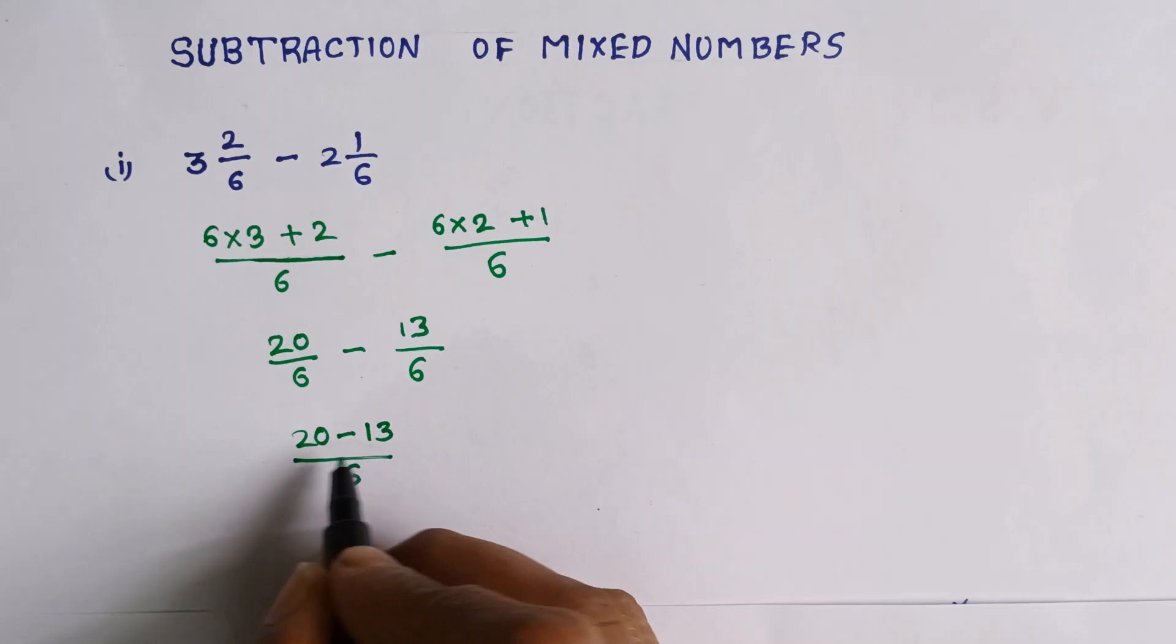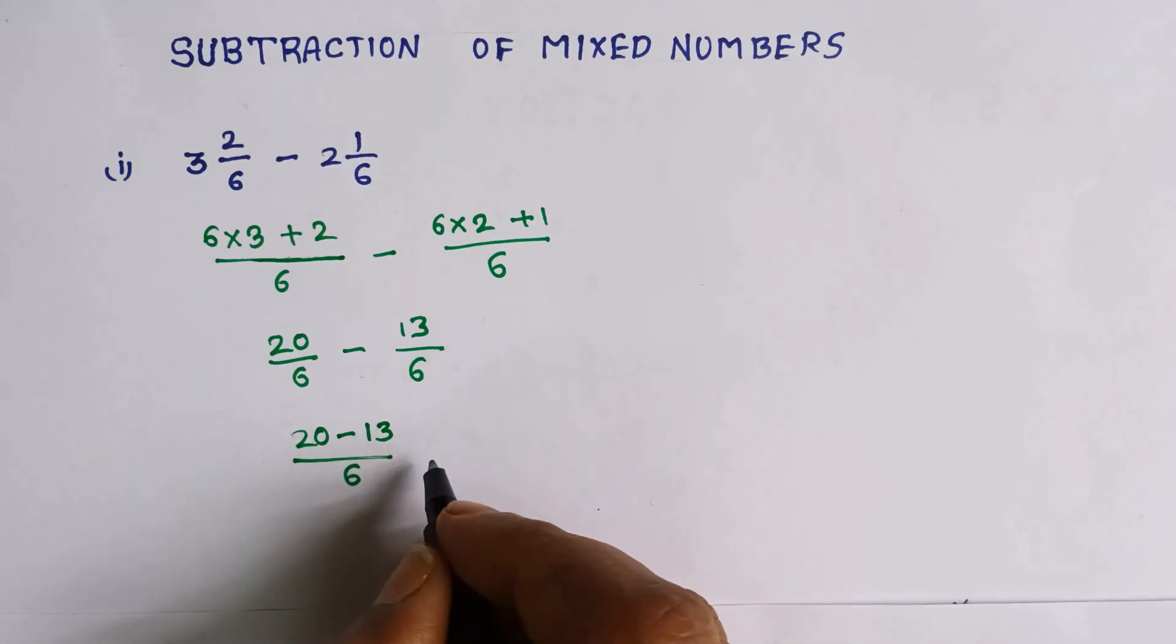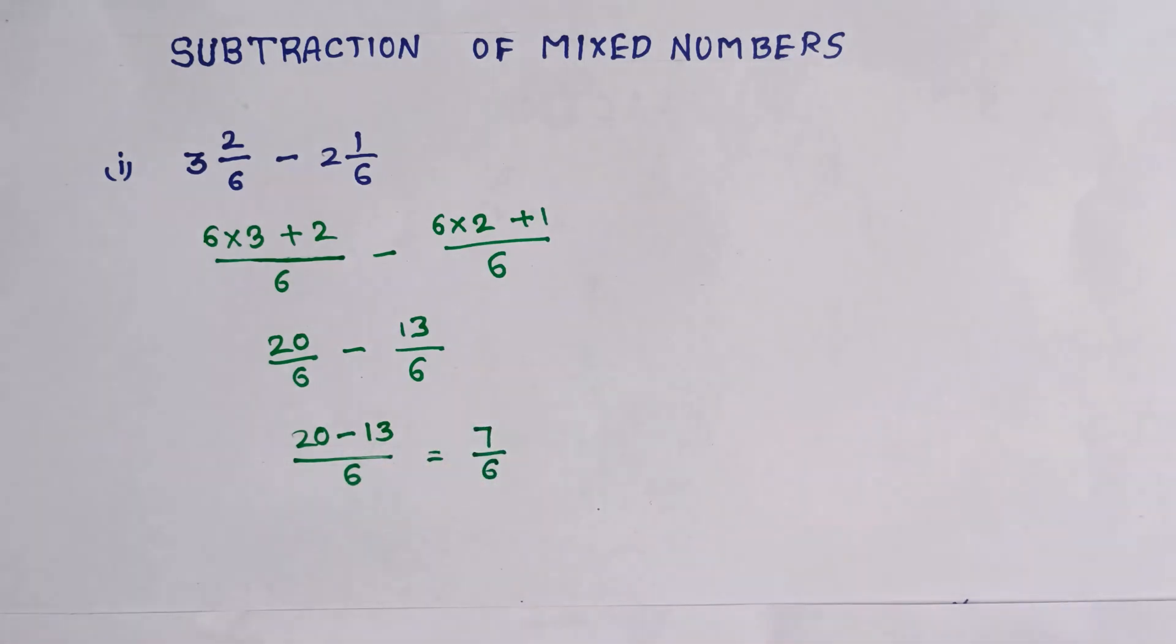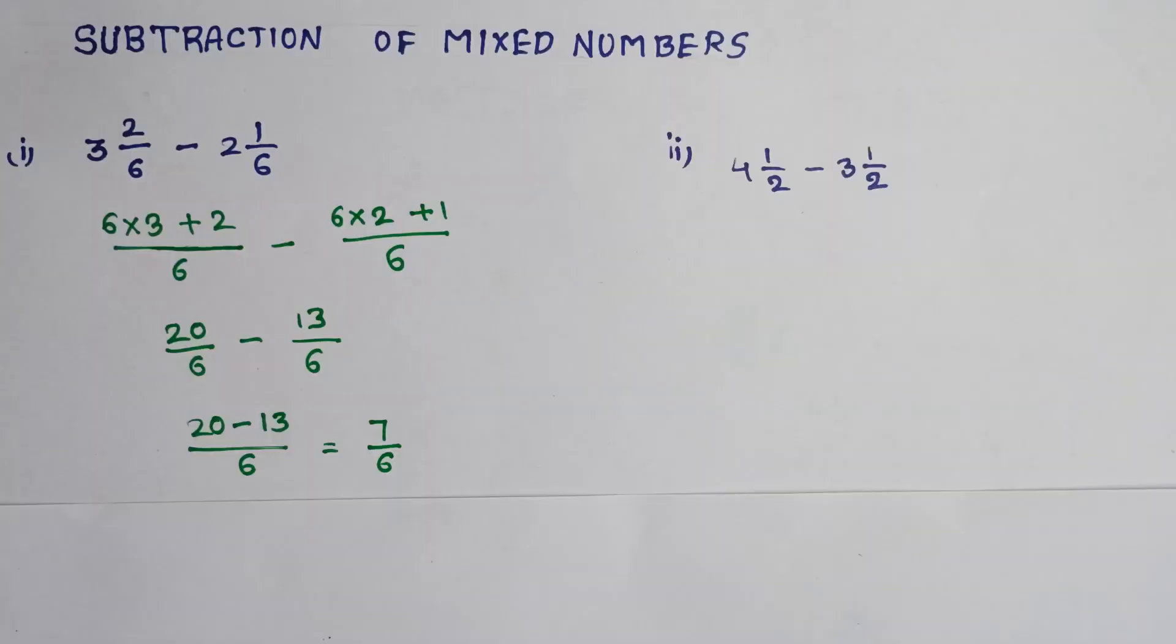So from 20 if you subtract 13 it will be 7, so 7 by 6 is the answer.